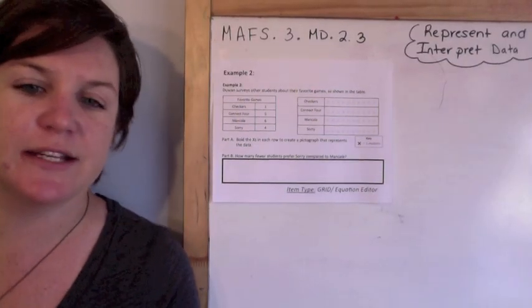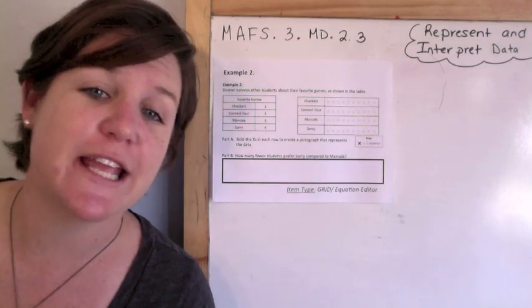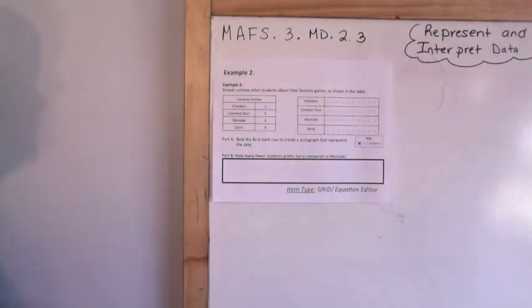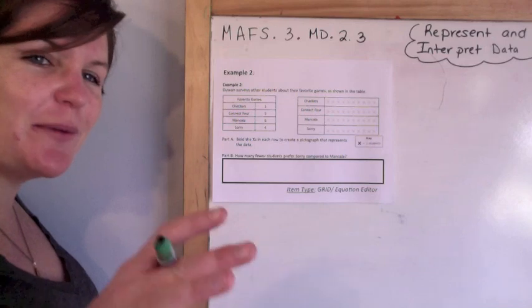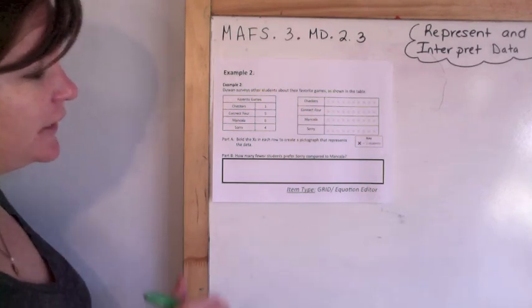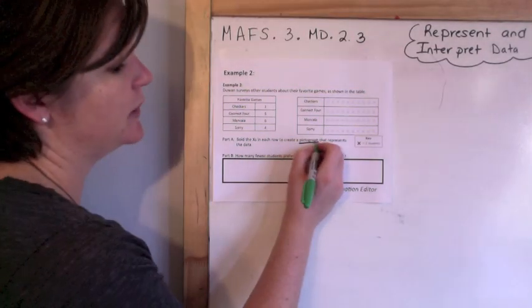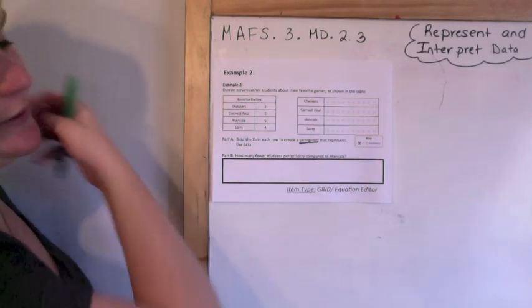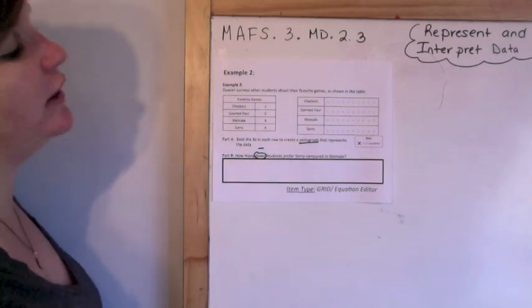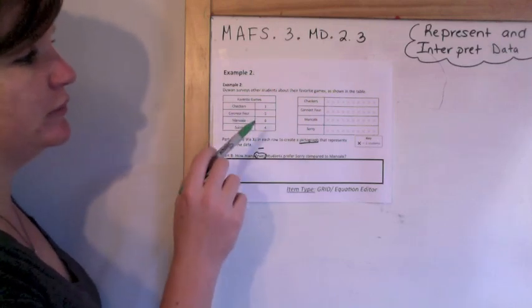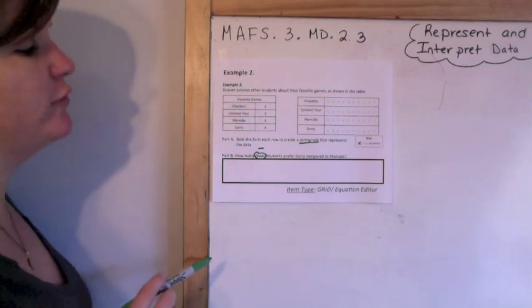Example two: Julian surveys other students about their favorite games as shown in the table. Again, a two-parter. Part A: bold the Xs in each row to create a pictograph that represents this data. And part B: how many fewer students prefer Sorry compared to Mancala? So he surveys people with their favorite games: one person likes checkers, five people like Connect Four, six people like Mancala, and four people like Sorry.